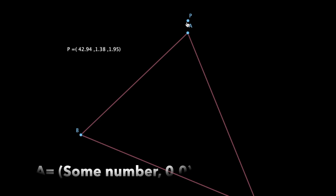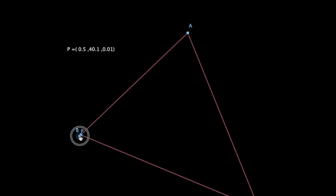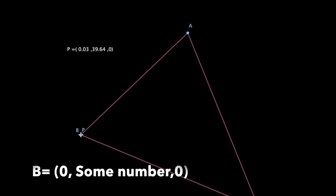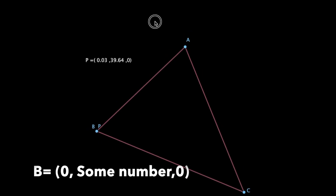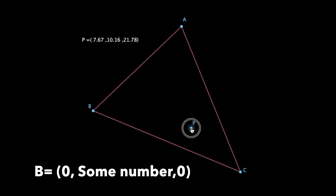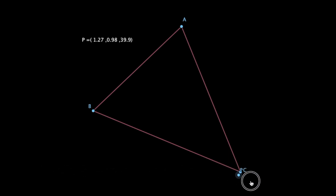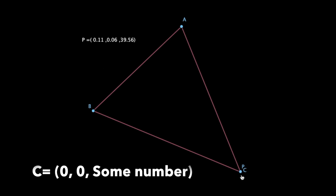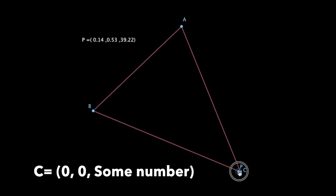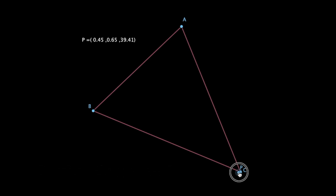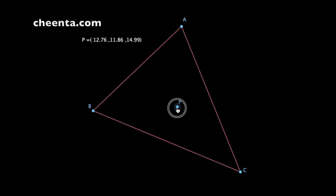The same thing happens if I bring the point P to vertex B — the first and the last coordinate become 0, and the middle coordinate becomes something. And then let's bring the point P to C. You can guess what happens: the first two would become almost 0, and if I actually put it exactly on C, the first two coordinates become 0 and the last one becomes roughly the same number as we got at A and B.